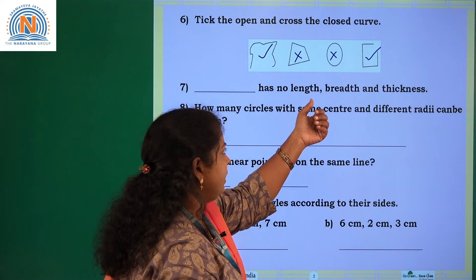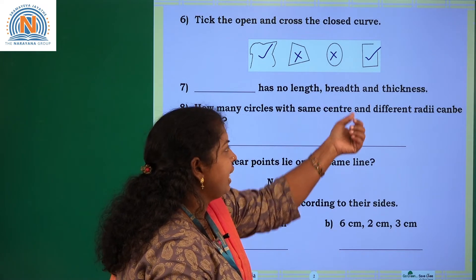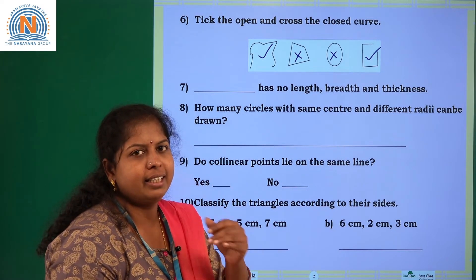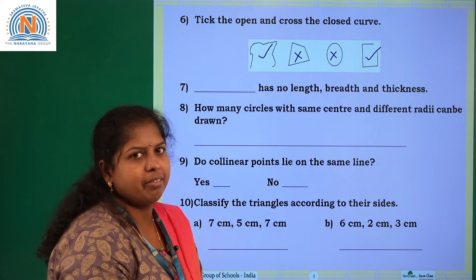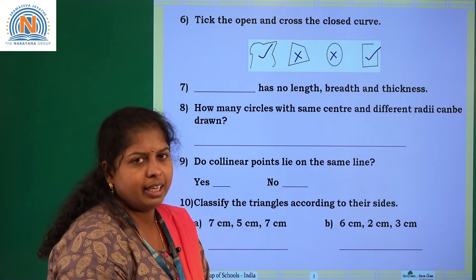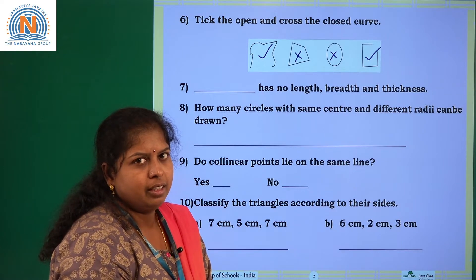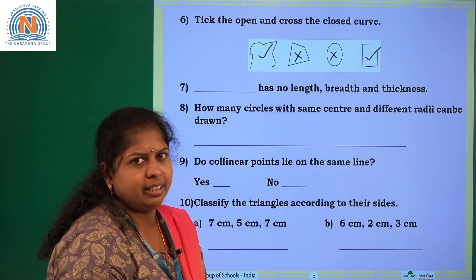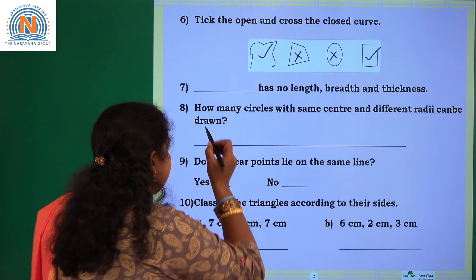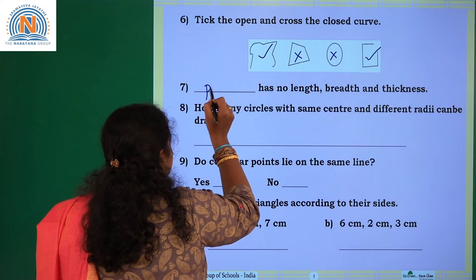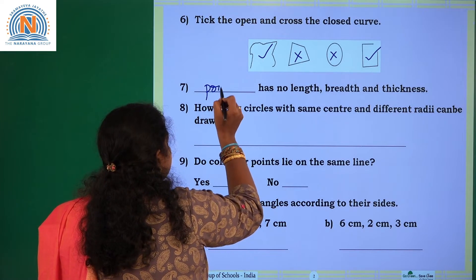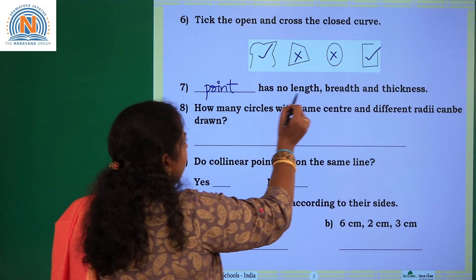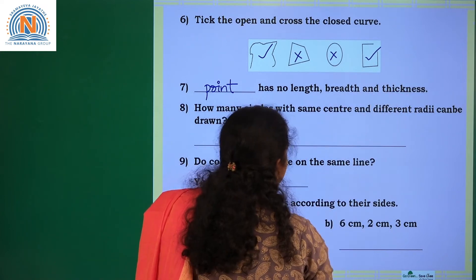Dash has no length, breadth, and thickness. If you observe a ray, a line, a line segment — all are having some length. A line extends endlessly. There is only a point which has no length, no breadth, and no thickness.